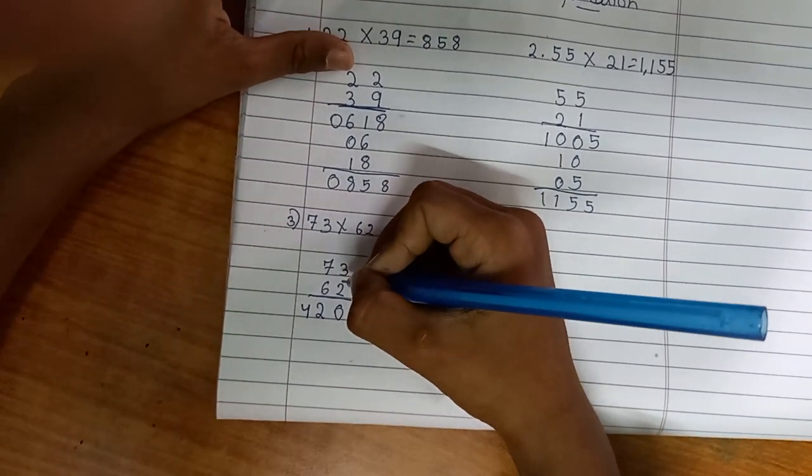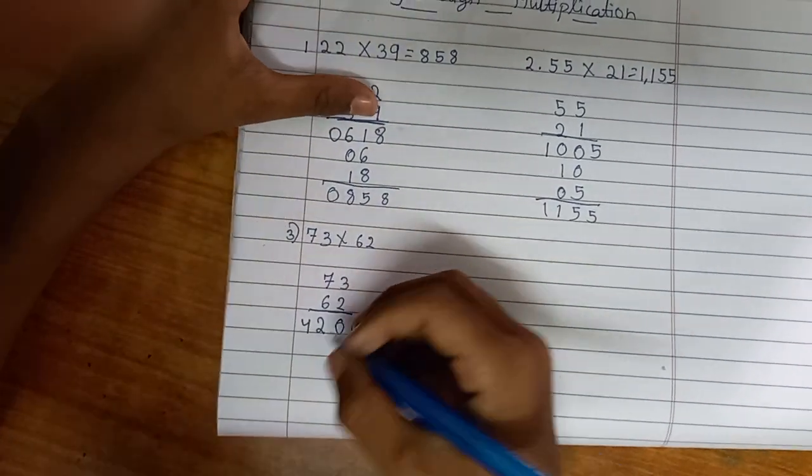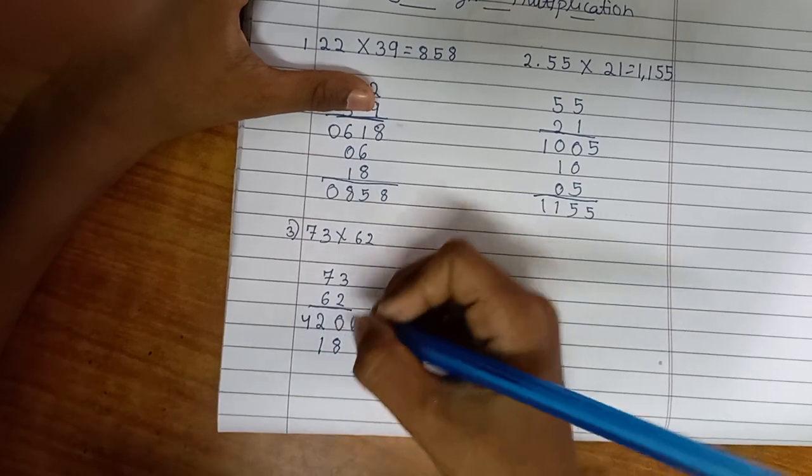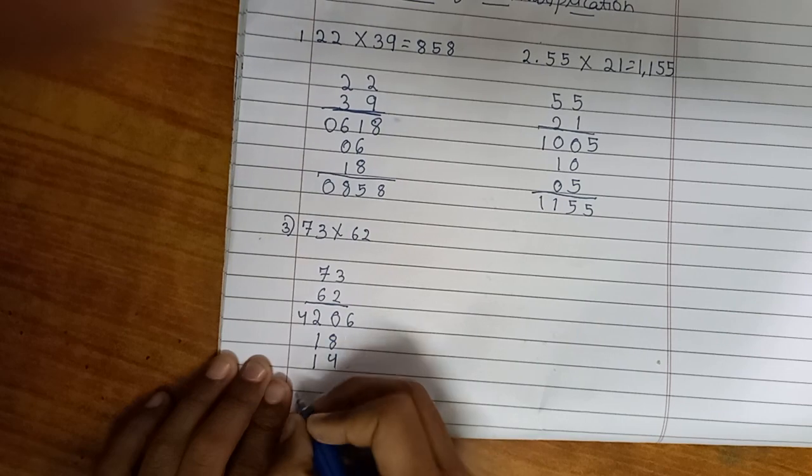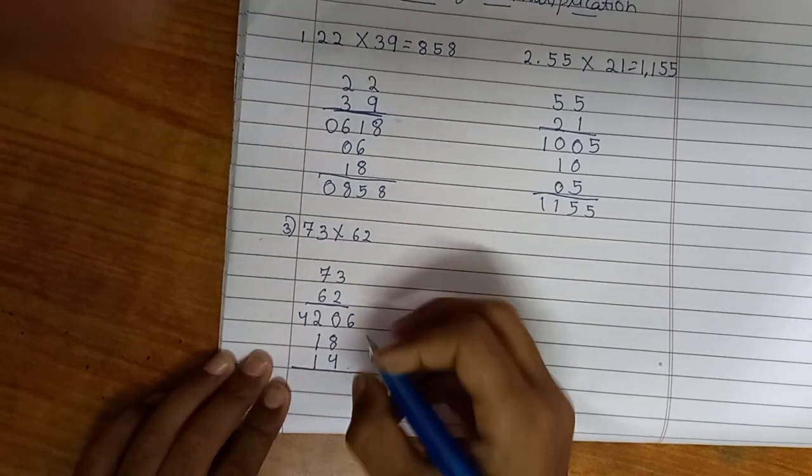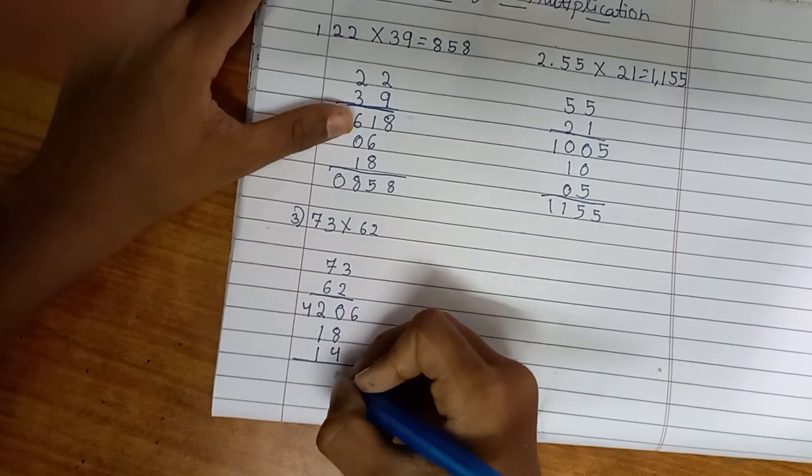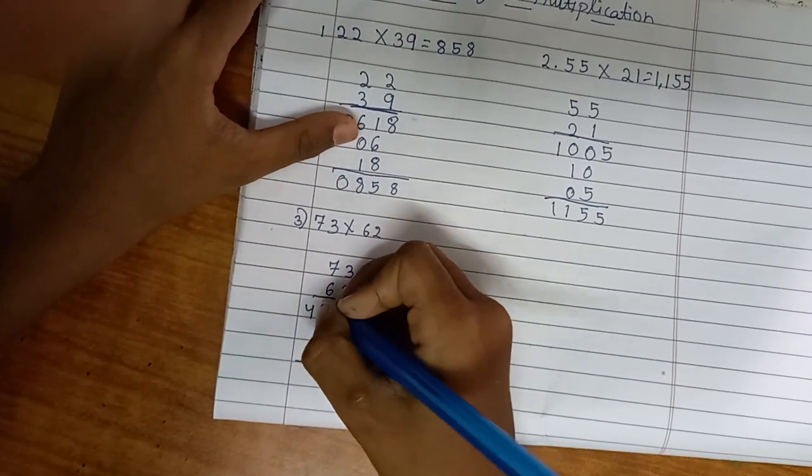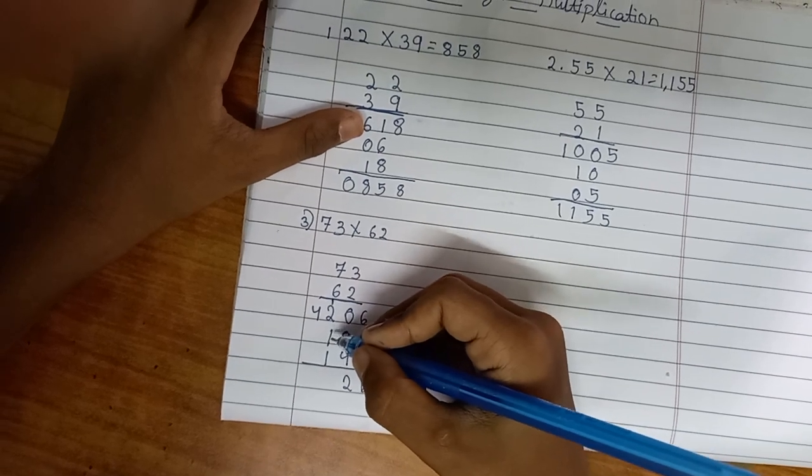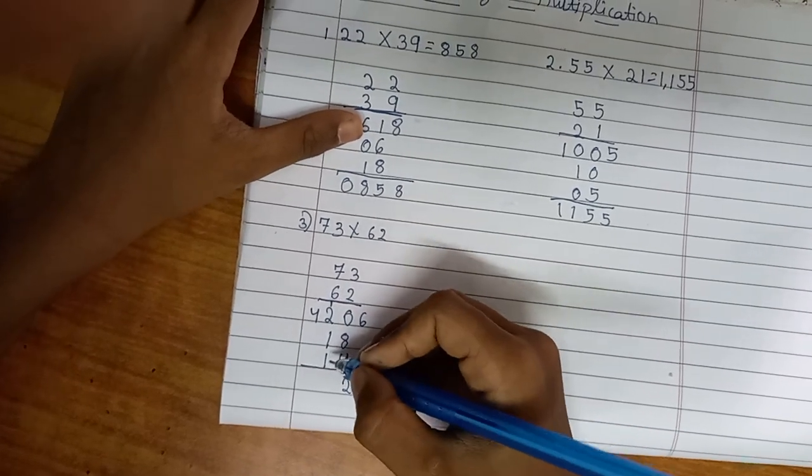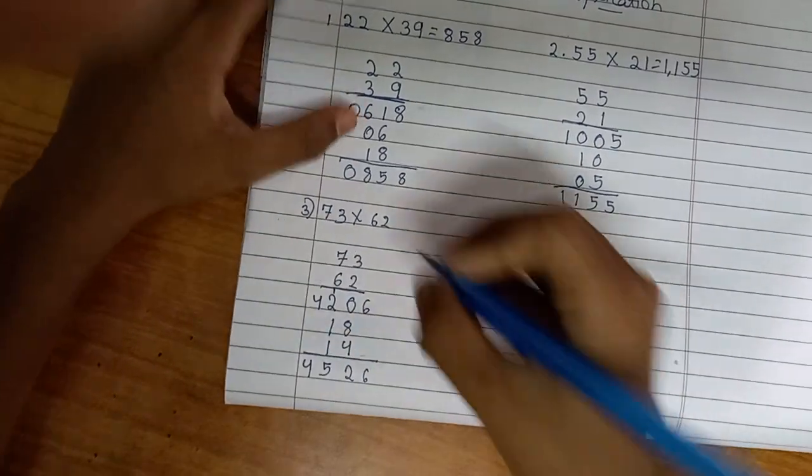I mean 6 times 3 is 18, and 7 times 2 is 14. Now we'll add them: 6, then 4, 12, so 2 plus 1 is 3, 3 plus 1 is 4, 4 plus 1 is 5. The answer is 4526.